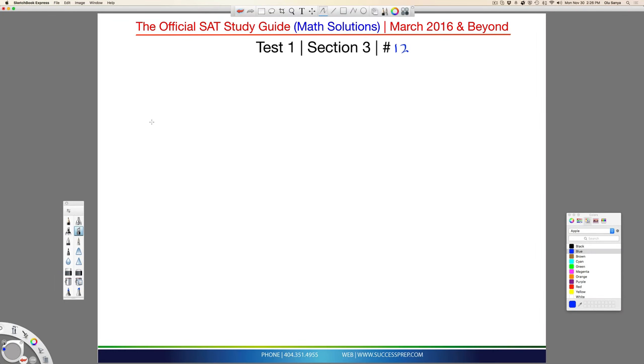Alright, for question number 12, it talks about a line that passes through the origin and has a slope of 1/7.